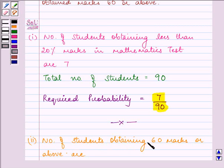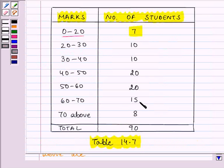The number of students obtaining 60 marks or above are 15 plus 8.